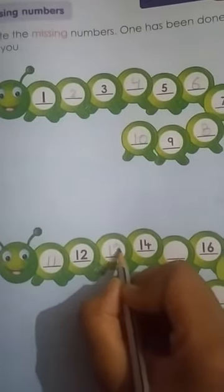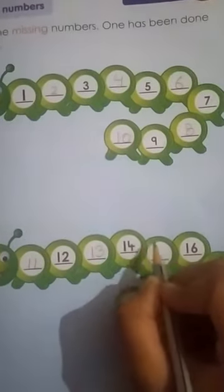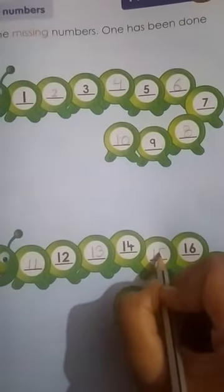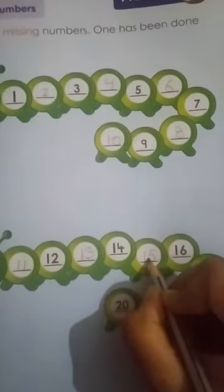Thirteen. One three. Thirteen. One three. Fifteen. Fifteen. Sixteen, seventeen. Seventeen. Eighteen. Eighteen, nineteen. Nineteen, twenty.